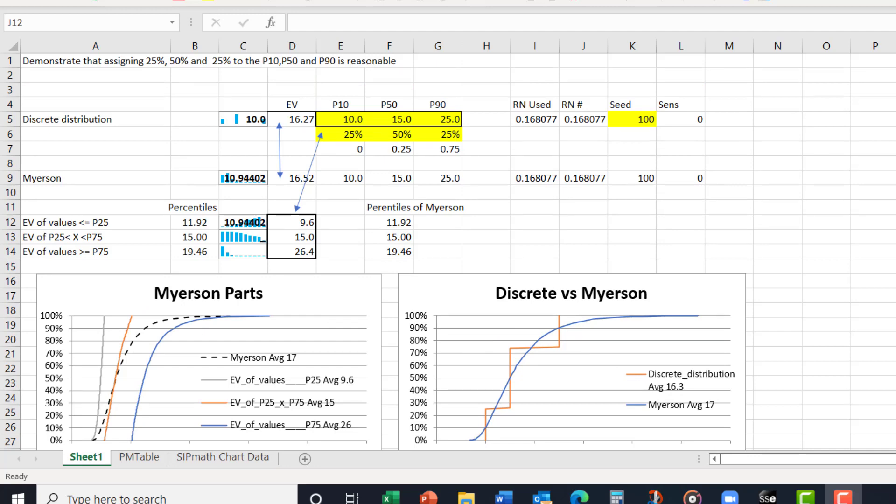So then I fit those parameters to a Myerson distribution. And you can look up a Myerson distribution on Wikipedia. But it uses the same inputs, P10, P50, P90. And I've plotted that.